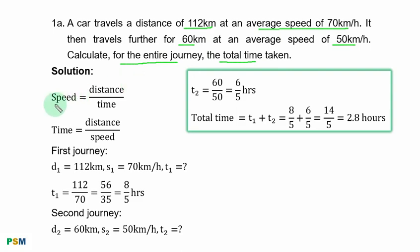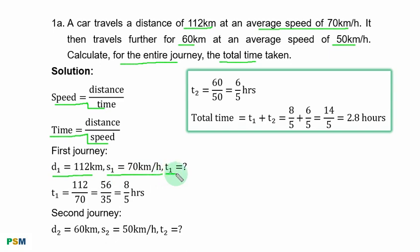Solution. Speed is equal to distance over time. We are interested in time — if you make time the subject, it is equal to distance over speed. First journey: distance is 112 kilometers, speed is 70 kilometers per hour, time is unknown.